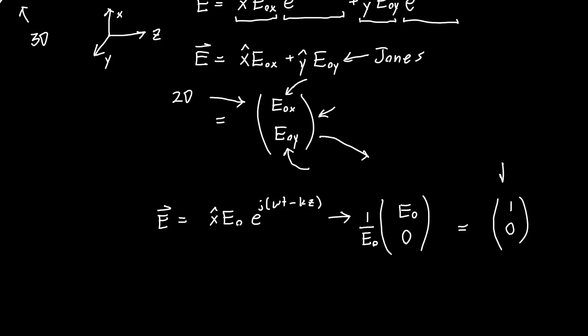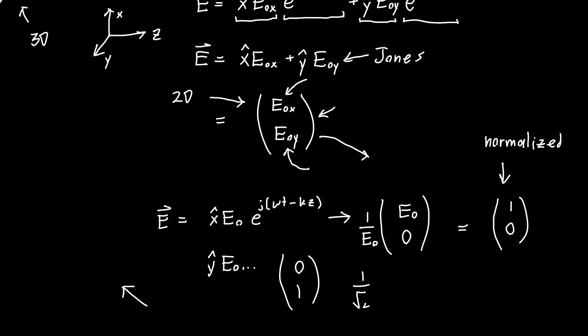The normalized Jones vector for a wave pointing in x is (1, 0), and it just tells us the direction the electric field is pointing. For a traveling wave in the y direction, the Jones vector would be (0, 1). If it were pointing half in x and half in y — up at 45 degrees — then the Jones vector would be (1/√2)(1, 1). This is just a normalized vector pointing at 45 degrees in x and y.